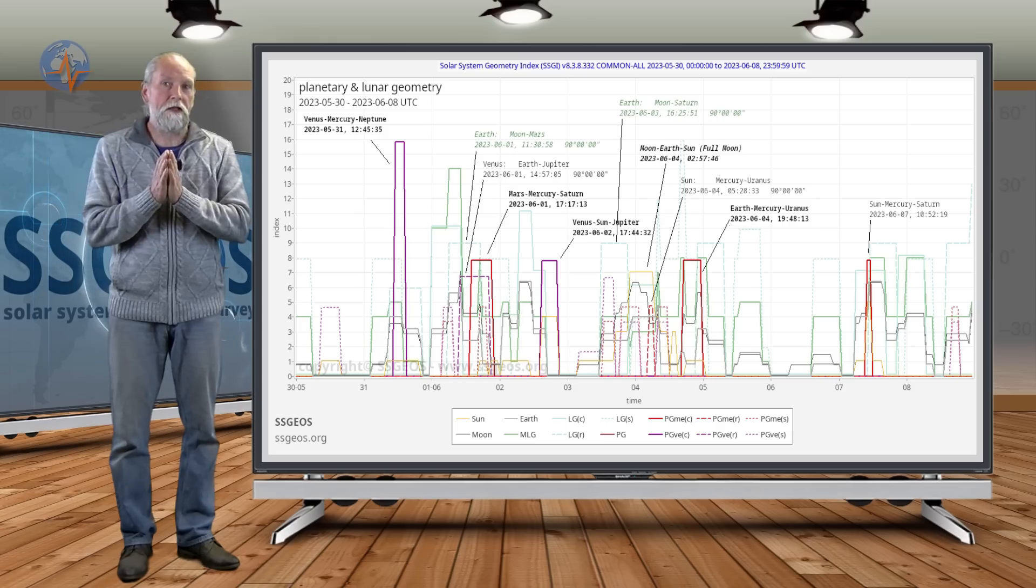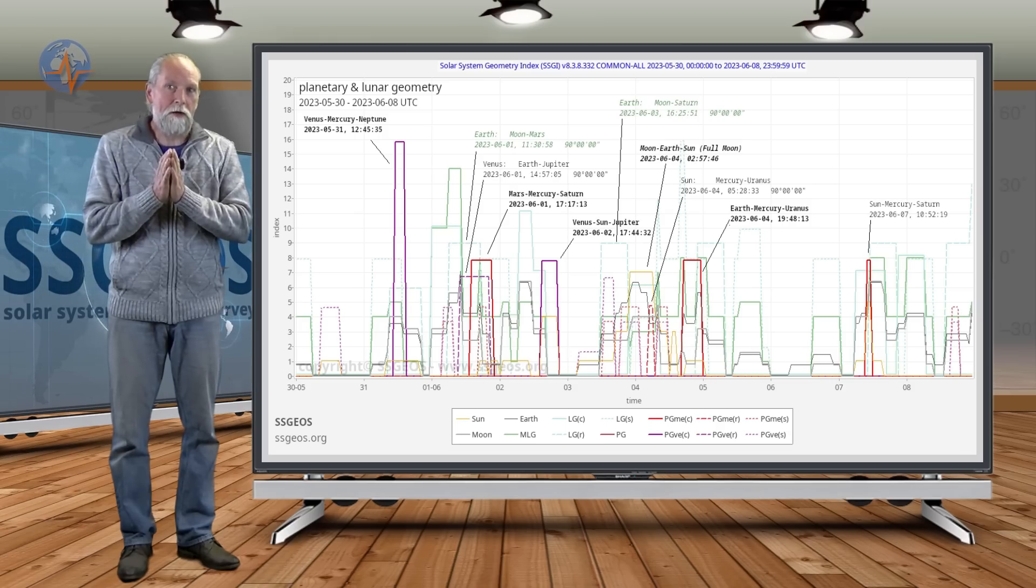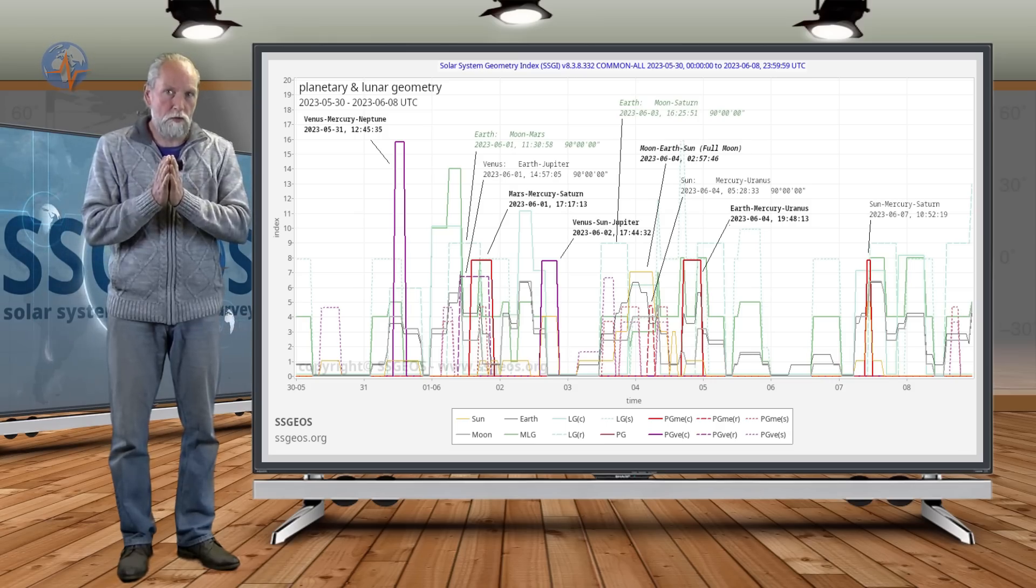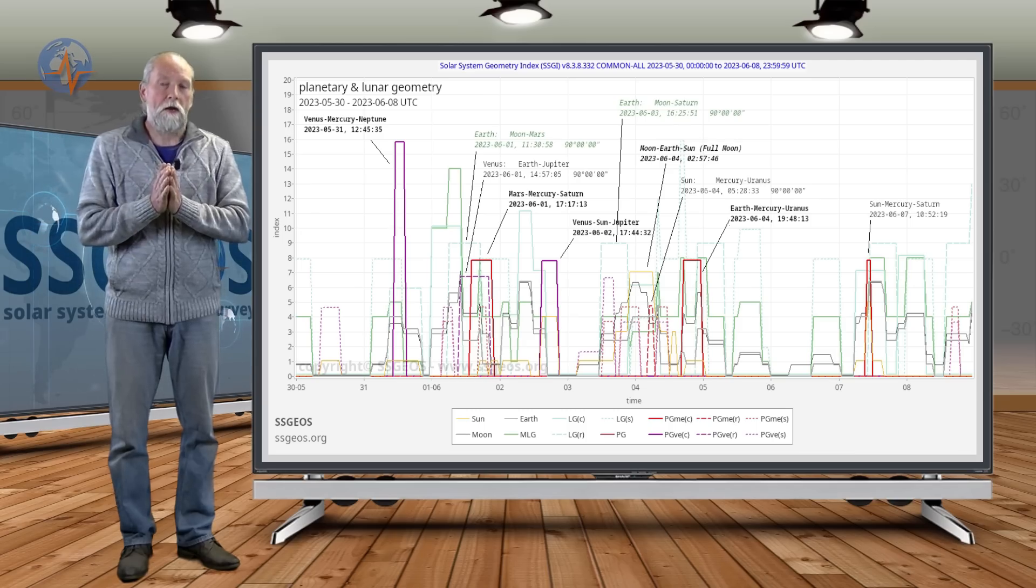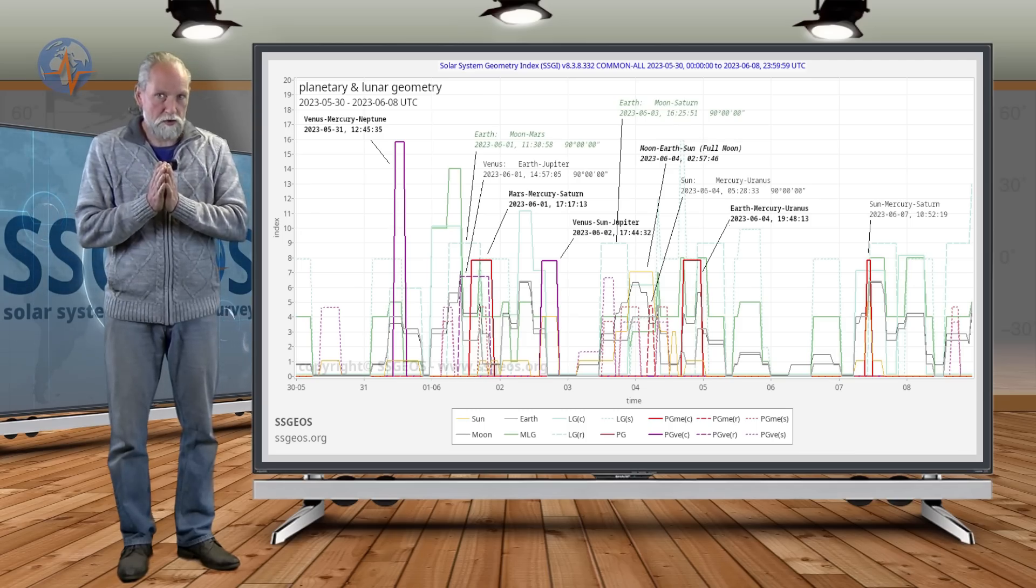And that will culminate roughly at the end of July, early August, and by that time Neptune will join with similar geometry, and that will be very critical in August, around August most likely.